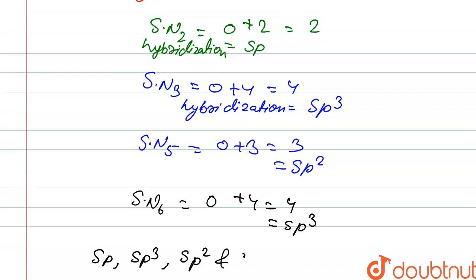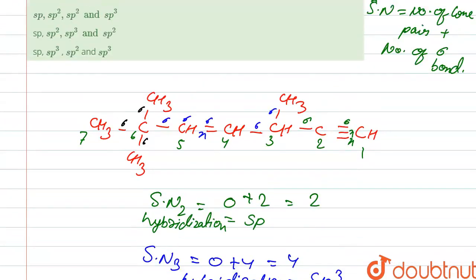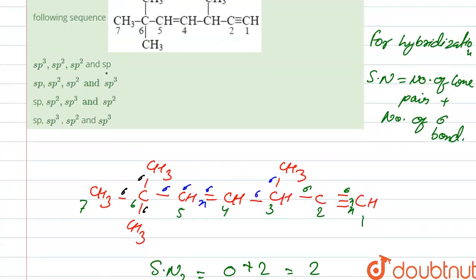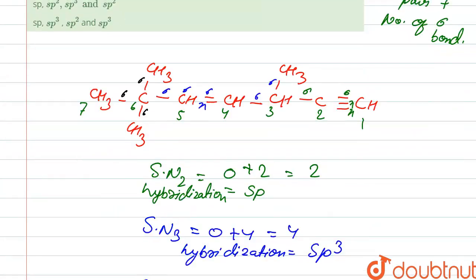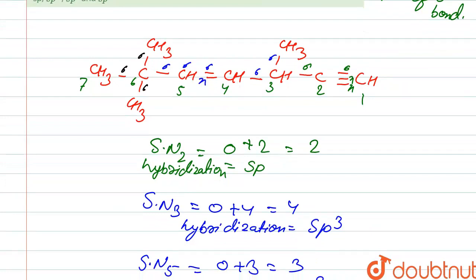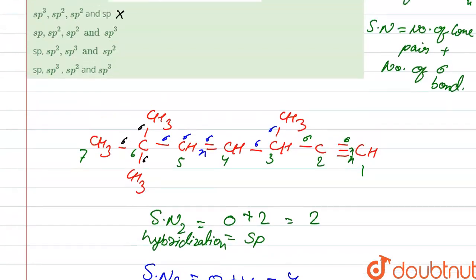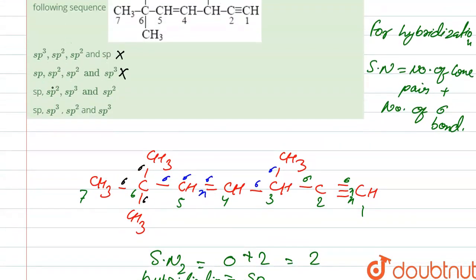Coming toward our options: this one is matched with sp, sp3 — but here the first is sp3, so it is wrong. Here it is sp, sp2 — but our carbon three hybridization is sp3, so it is also wrong. Next is sp, sp2 — also wrong. sp, sp3 — so it is correct. Our correct option is option D.